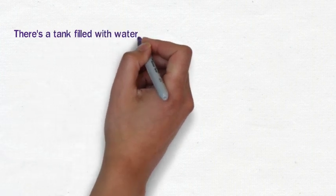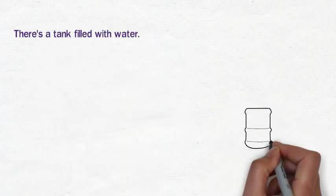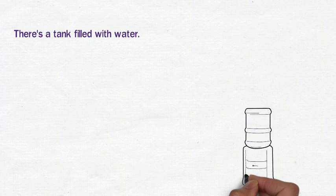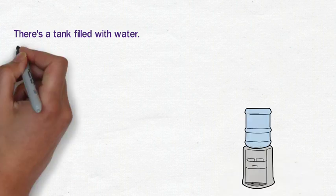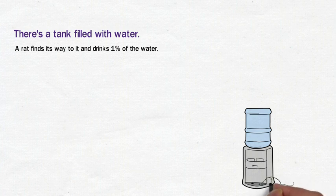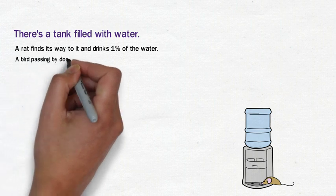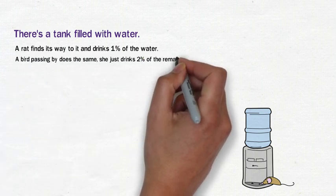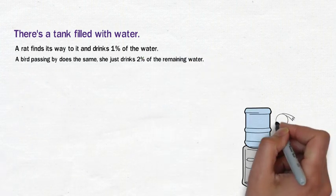Now consider a tank filled with water. Do you think it's weird the quantity of water is not provided? I think so too. A rat finds its way to the tank and drinks 1% of the water from the tank. Some mathematician this rat must be. A bird then comes along and drinks 2% of the remaining water.